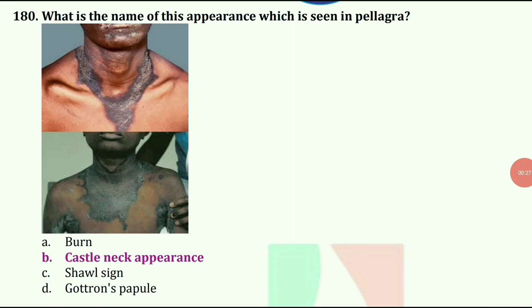What is the name of this appearance seen in pellagra? The answer is Casal's necklace appearance.